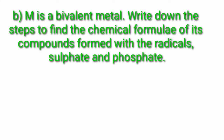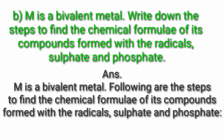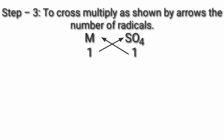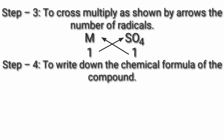Question 4B: M is a bivalent metal. Write the steps to find the chemical formulae of its compounds formed with the radicals sulfate and phosphate. Answer: For compound with sulfate — Step 1: Write symbols of radicals, basic on left and acidic on right: M SO4. Step 2: Valency of M is 2, valency of SO4 is 2. Dividing by common factor, valencies become 1, 1. Step 3: Cross multiply — M multiplied by 1, SO4 multiplied by 1. Step 4: Chemical formula is MSO4.